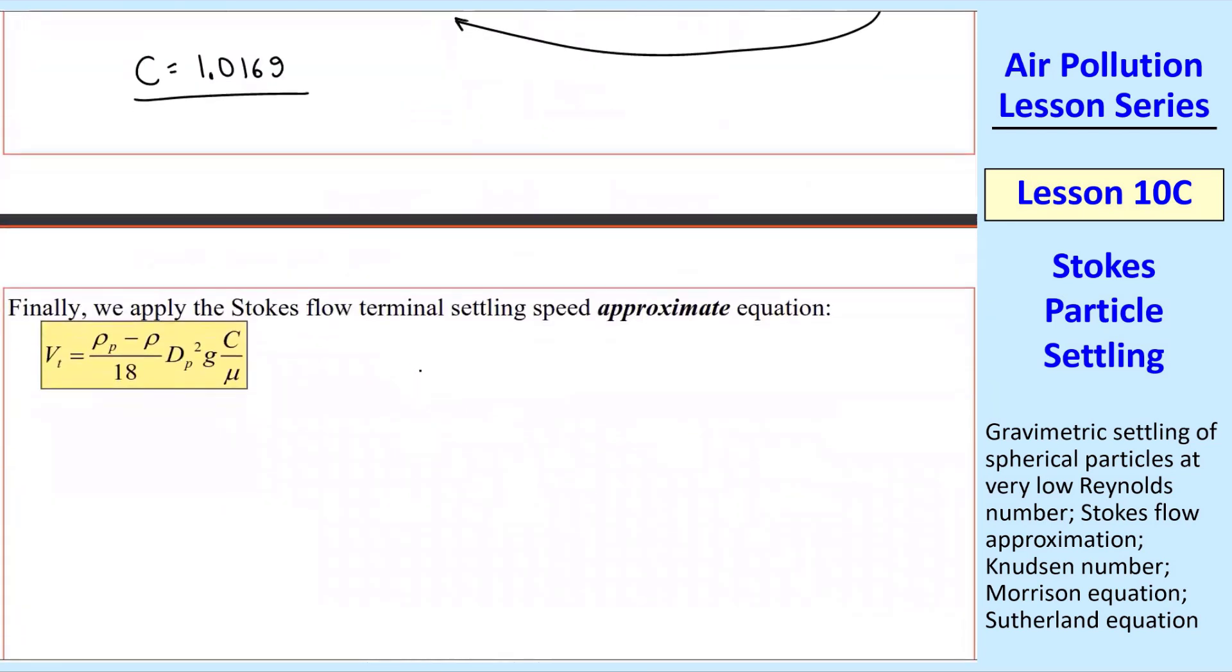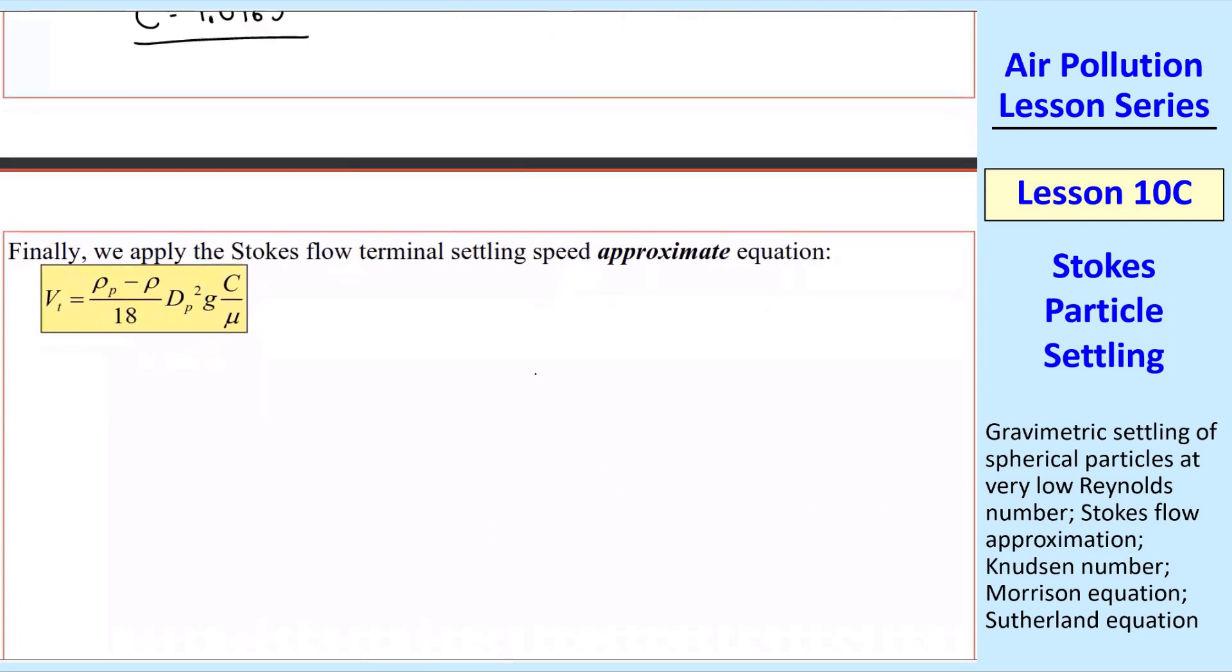we can apply Stokes flow terminal settling speed approximate equation. Remember, this is an approximation. So we plug in the numbers, particle density, air density, and their units are kilogram per meter cubed, over 18. DP squared, 10.0 microns. Make sure you watch your units here. I'm going to put these into meters. So 10.0 times 10 to the minus 6 meters squared. That's our DP squared.